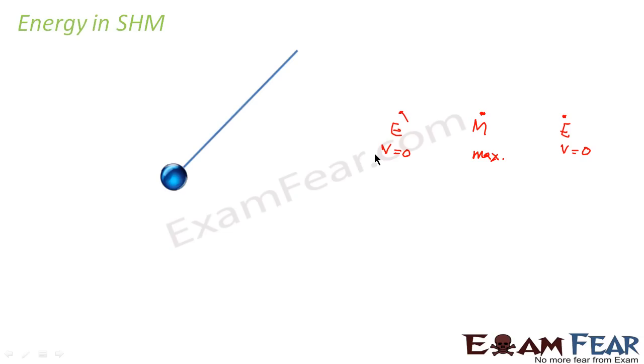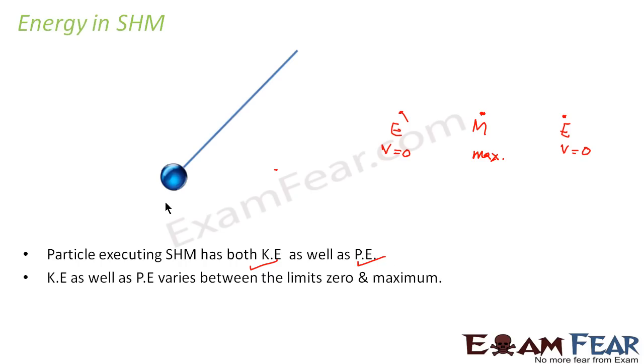So from this, we can see that as the velocity varies, the kinetic energy associated with the particle will also vary. And similarly, the potential energy associated with the particle will also vary accordingly. So a particle executing simple harmonic motion has both kinetic energy as well as potential energy. So it will have both of them.